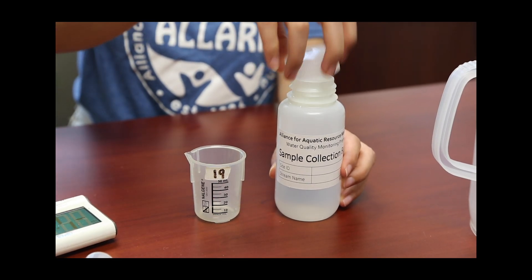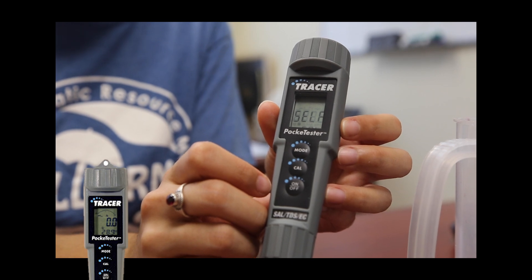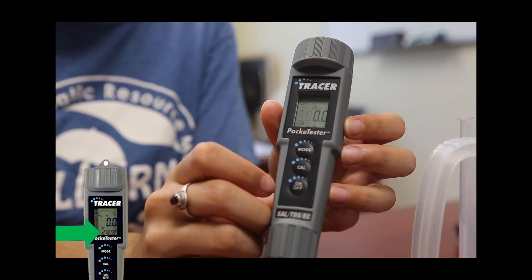You can test for temperature with your Lamont Tracer Pocket Tester. The reading will show in the bottom right corner of the meter's screen.